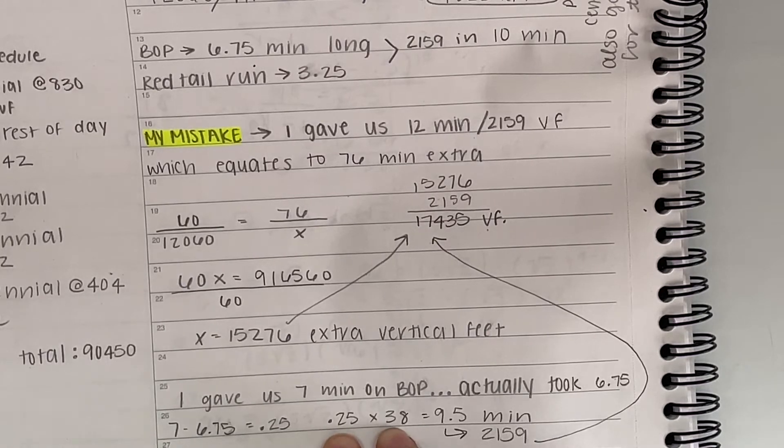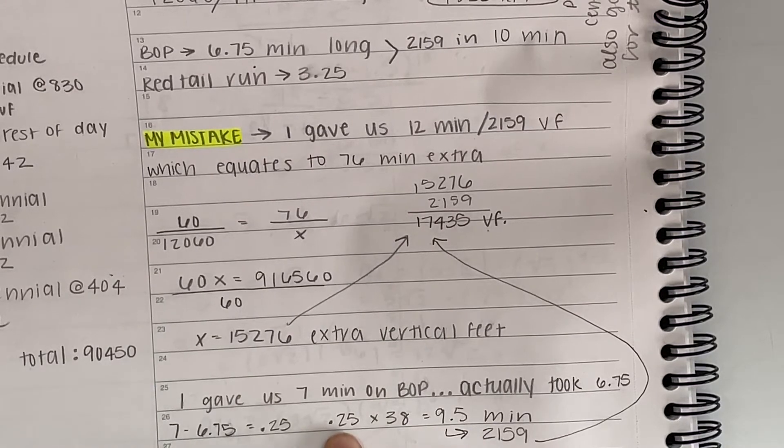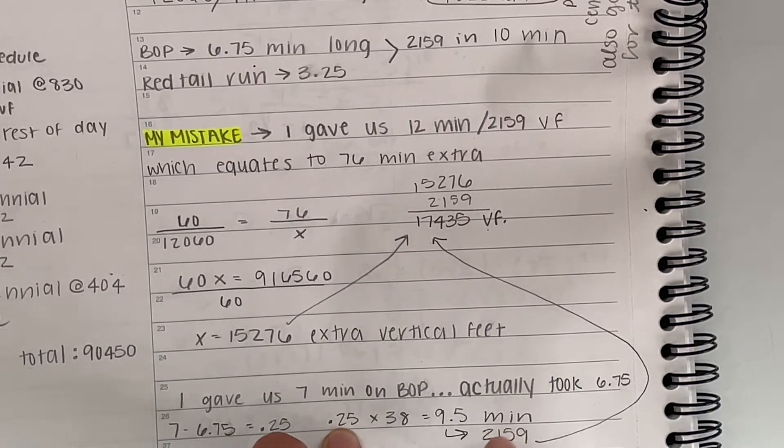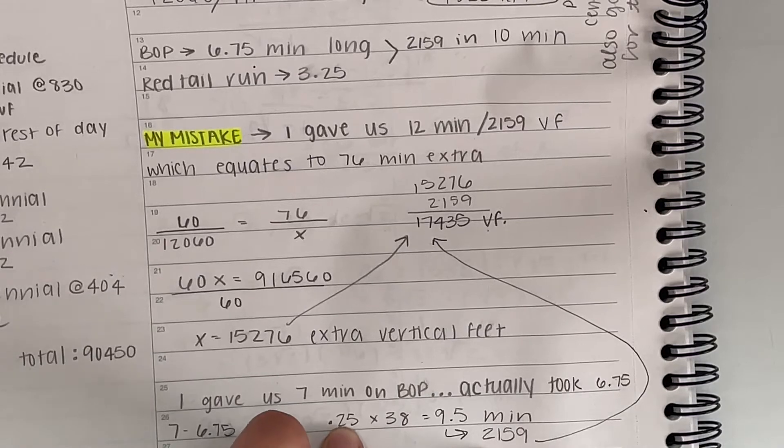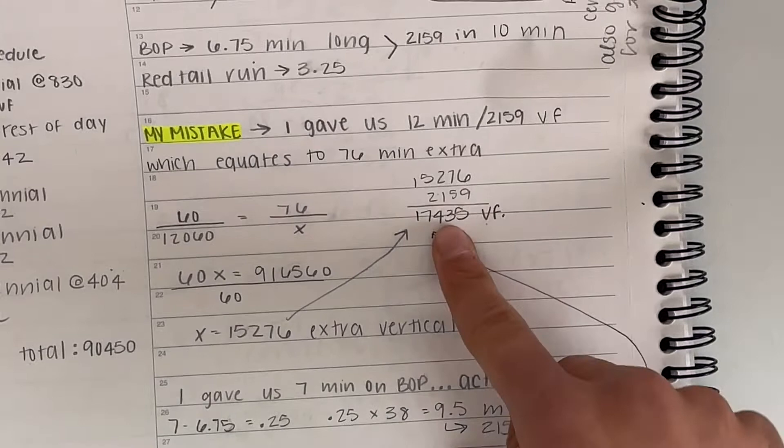And that's an extra 9.5 minutes of skiing. And that can easily be an extra 2,159 vertical feet, which is what I rounded it to. So when you do that right here, you take the time it takes.